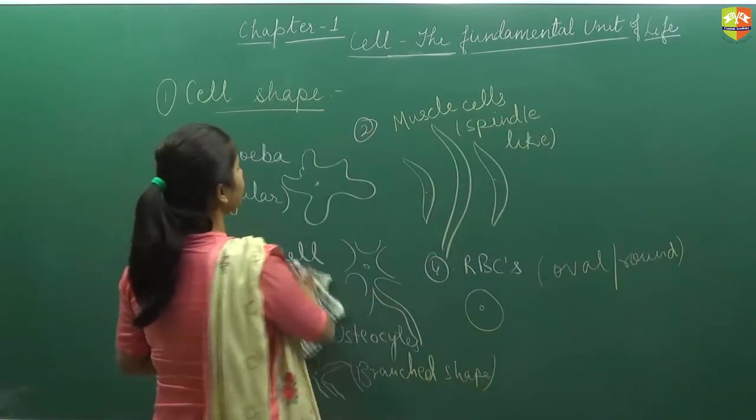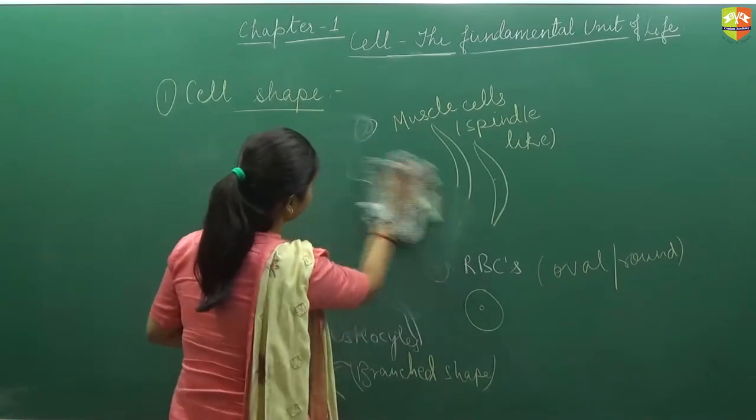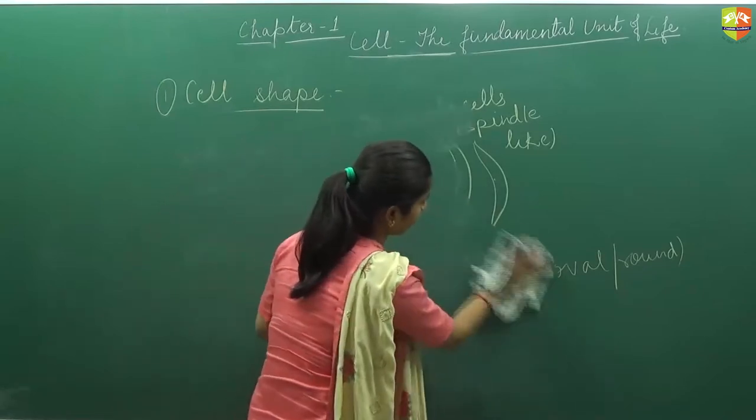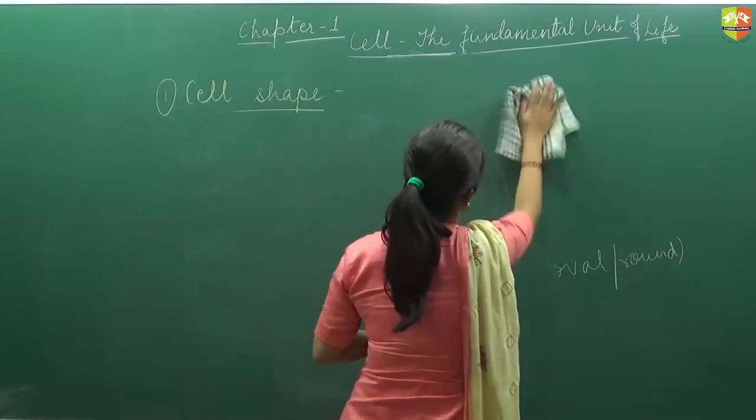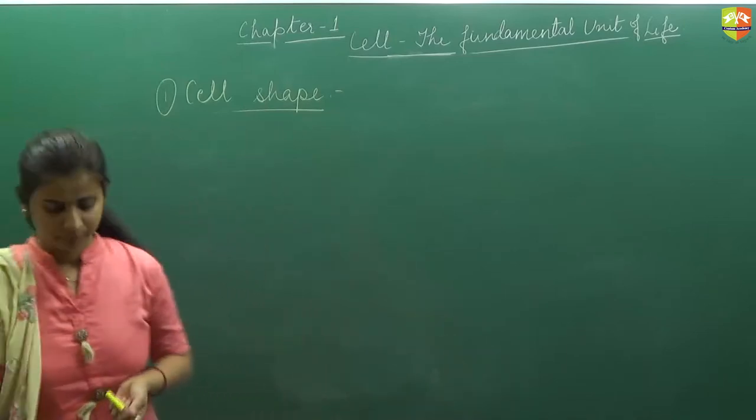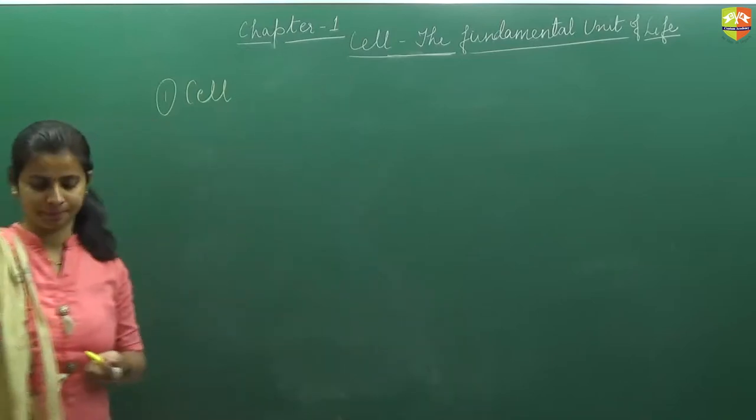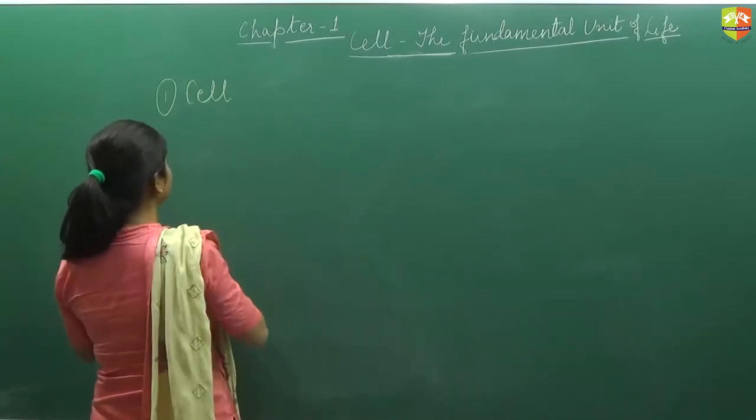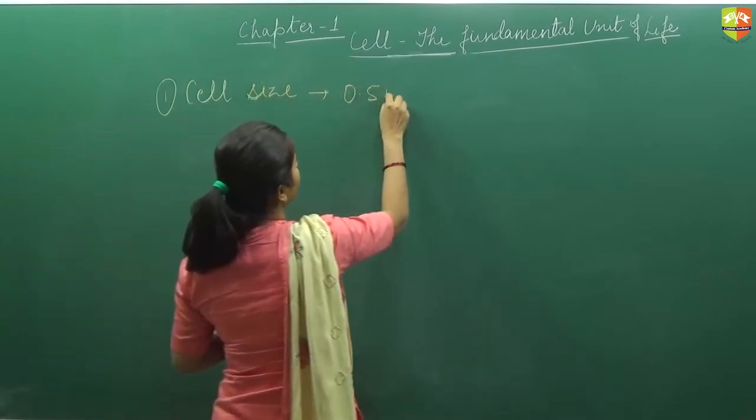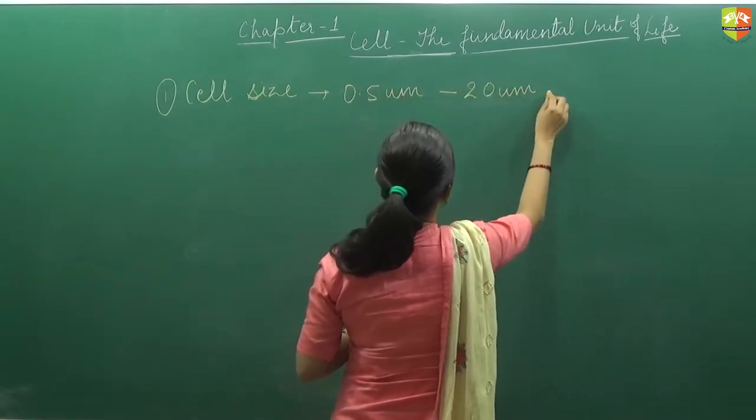Now the second thing which we have to study is cell size. The size of each and every cell is not same. Normally the size of the cell varies from 0.5 micrometer to 20 micrometer in diameter.